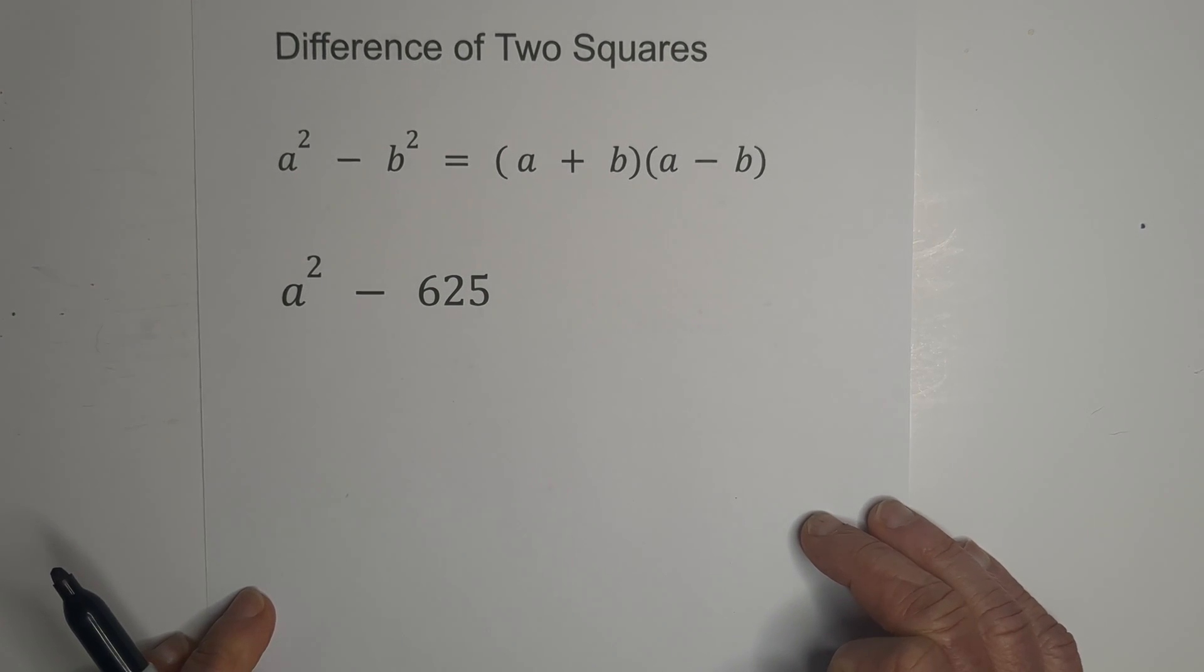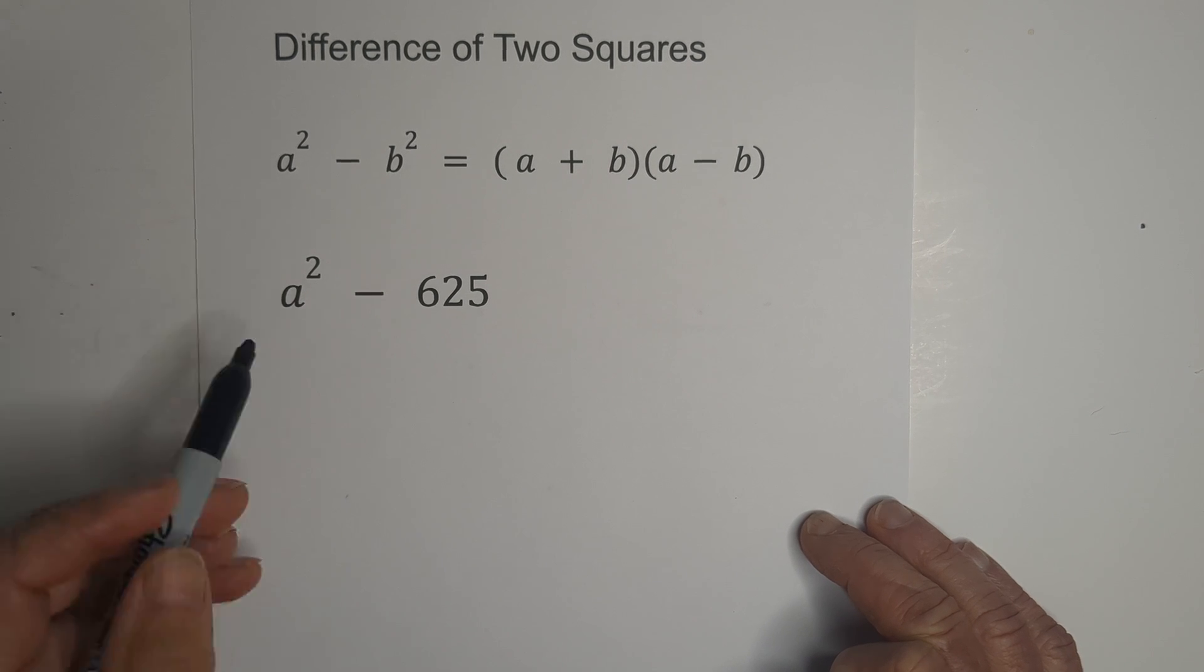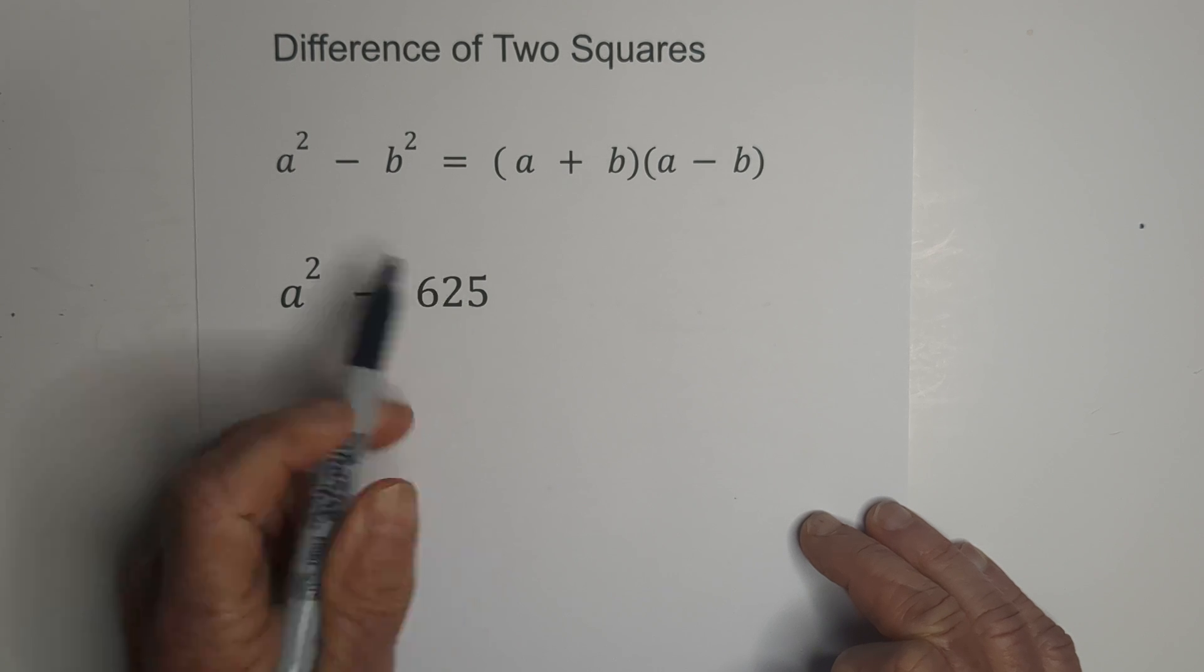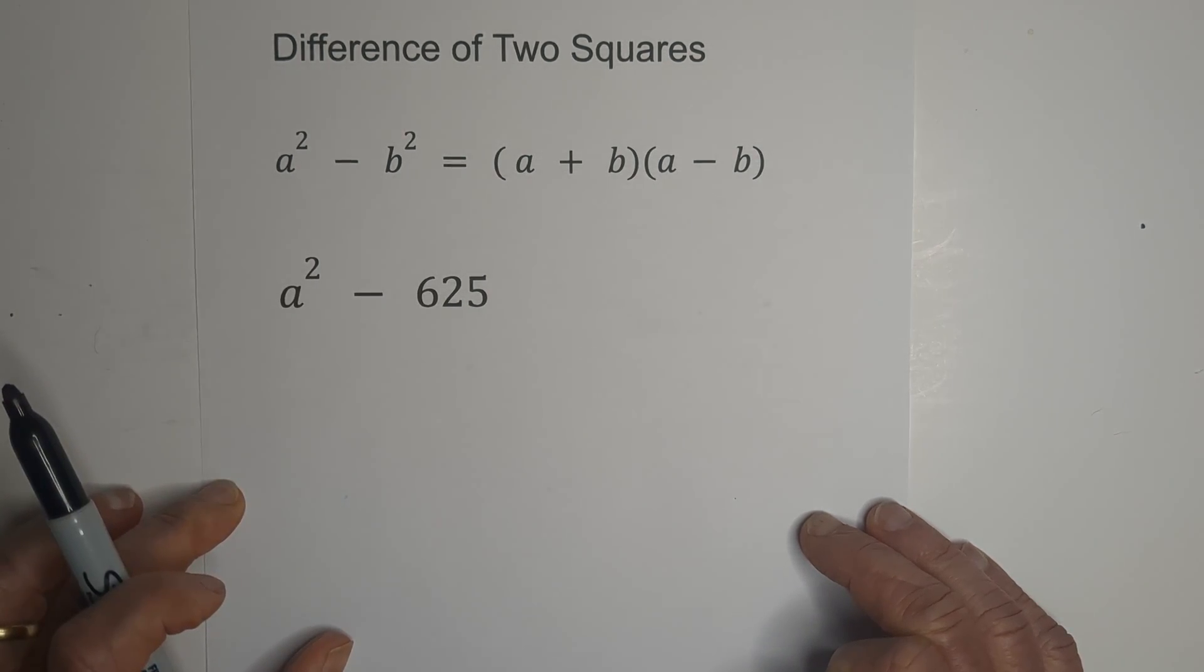So let's look at an example or two. In this example, we have a squared, obviously it's squared, and then we have 625, and I know that that is 25 squared.